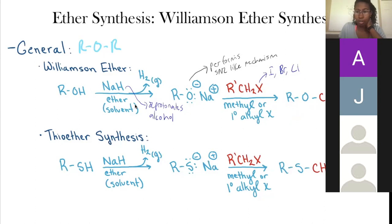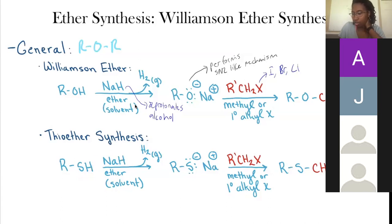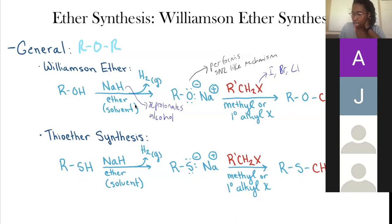The Williamson ether synthesis can also be used to make thioethers. The difference between an ether and a thioether is that instead of an oxygen, we have a sulfur. Oxygen and sulfur are in the same column of the periodic table and perform a lot of the same behaviors chemically. So we've got R-S-H instead of R-O-H. The sodium hydride deprotonates the sulfur, and RS-minus is a decent nucleophile. It performs an SN2 reaction and kicks off the halide, leaving us with R-S-R instead of R-O-R.